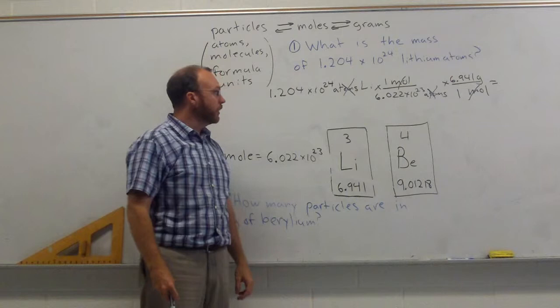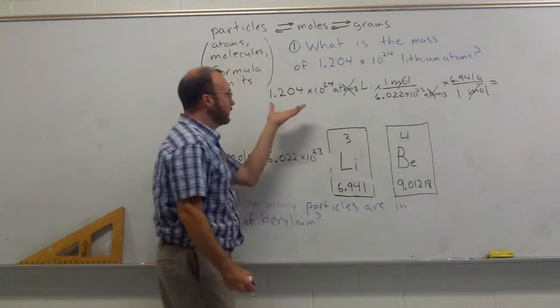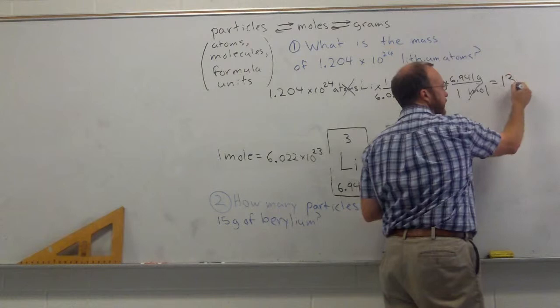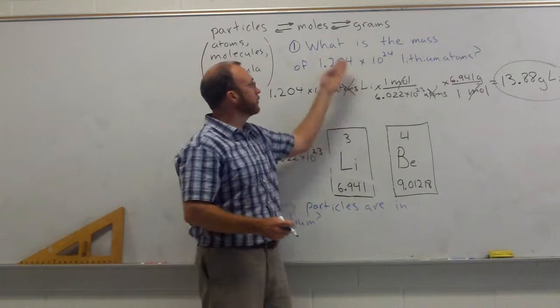So now we have this set up. So if you take your calculator, do 1.204 times 10 to the 24th divided by 6.02 times 10 to the 23rd, and then multiply that by 6.941. All of our numbers have four significant figures, so we'll round our answer off to four significant figures, and you get 13.88 grams of lithium. So we went from atoms, particles, to moles, and then from moles to grams.